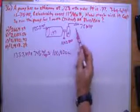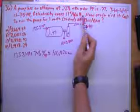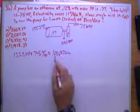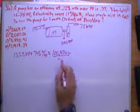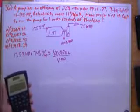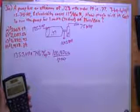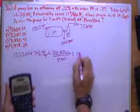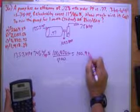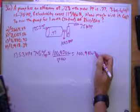But the cost is 11 cents per kilowatt hour, so we've got to turn it into kilowatts. That's just going to be 1 kilowatt is a thousand watts, so I'm going to divide it by a thousand, and that's going to give me 100.9 kilowatts.